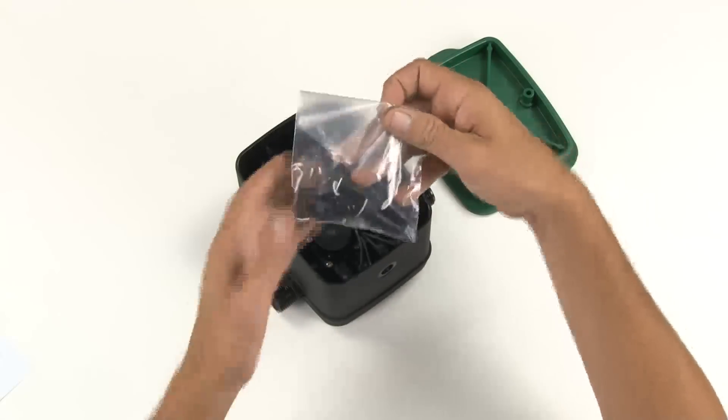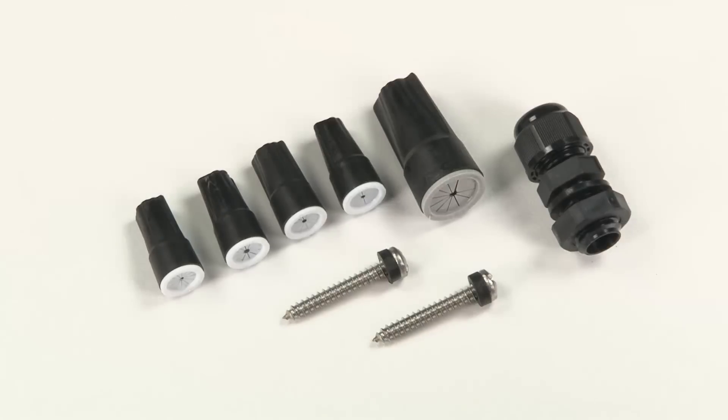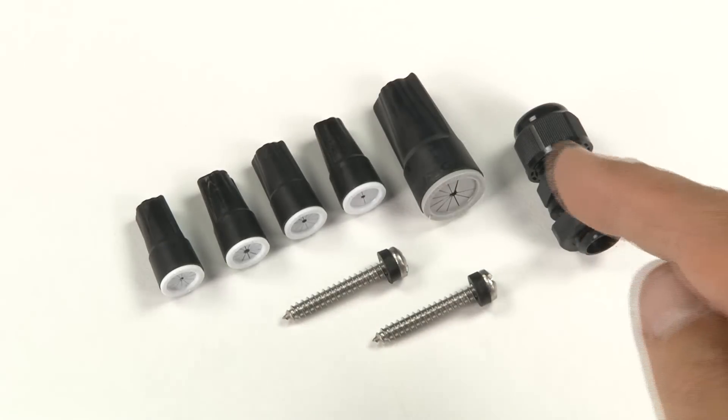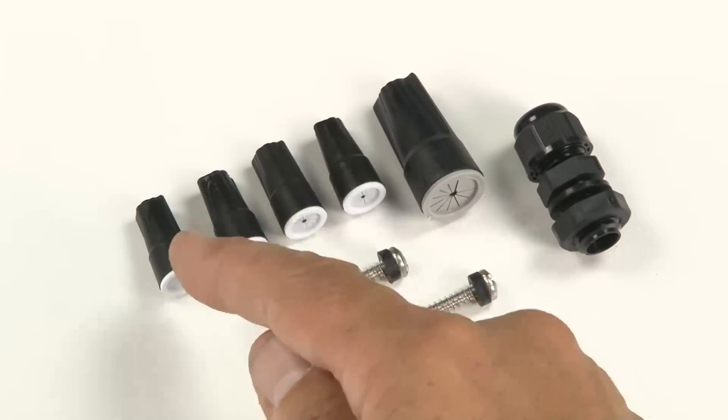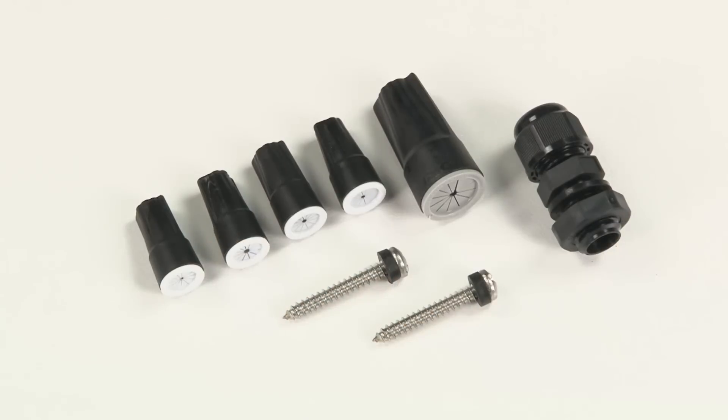Inside the box you'll find a bag of components. In the bag is a cable gland to seal the wiring, one large and four small wire connectors for connecting cable to your solenoids and two stainless steel screws with seals for securing the lid.